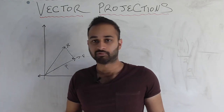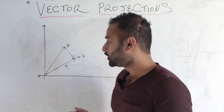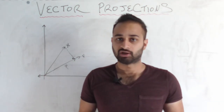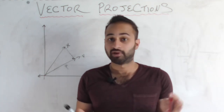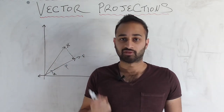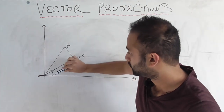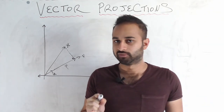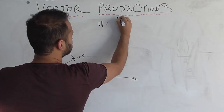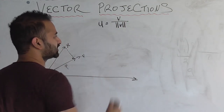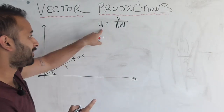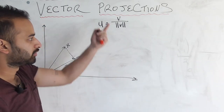We'll call the projection p. To make computations easier, we'll project onto the unit vector u, where u = v / ||v||. A unit vector has magnitude 1, and dividing v by its magnitude gives a vector in the same direction as v with magnitude 1. So u = v / ||v||.